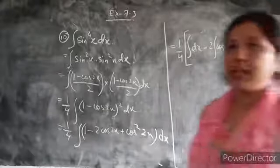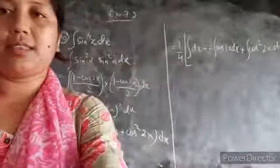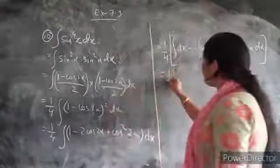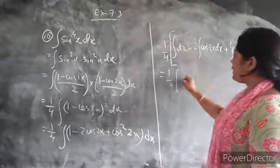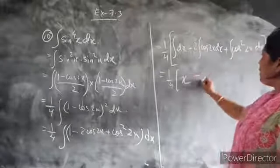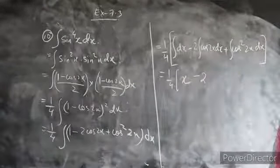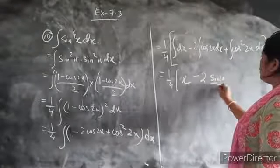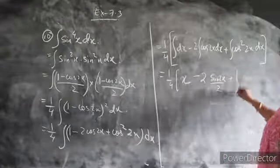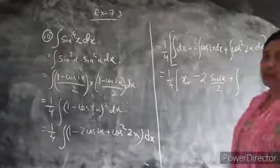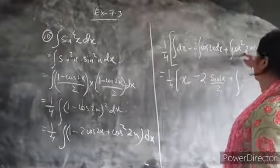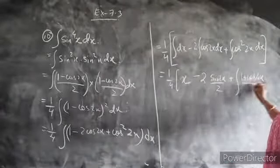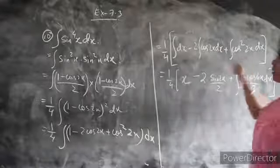I have separated the parts and now we will do the integration. So here, 1/4 times integration of dx minus 2 times integration of cos2x — this will give sin2x by 2 — plus integration of cos²2x. For cos²2x, we use the identity (1 plus cos4x)/2.